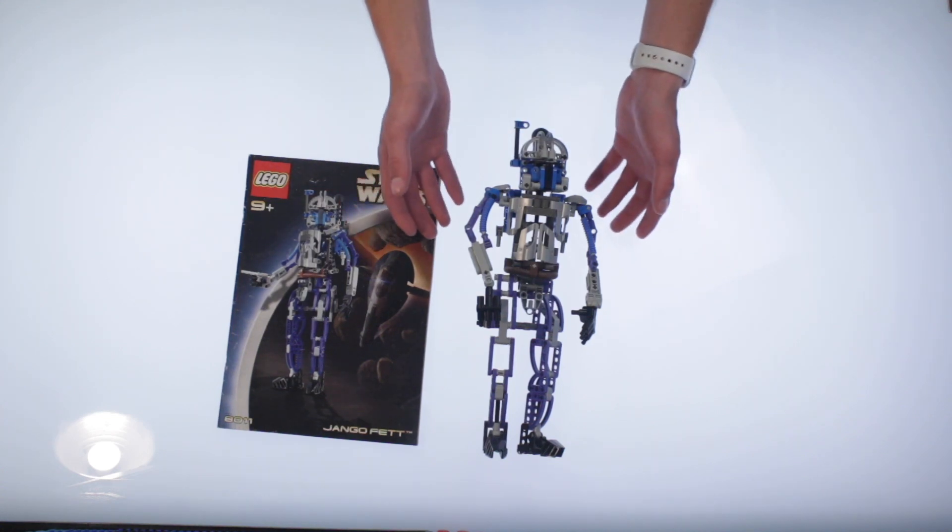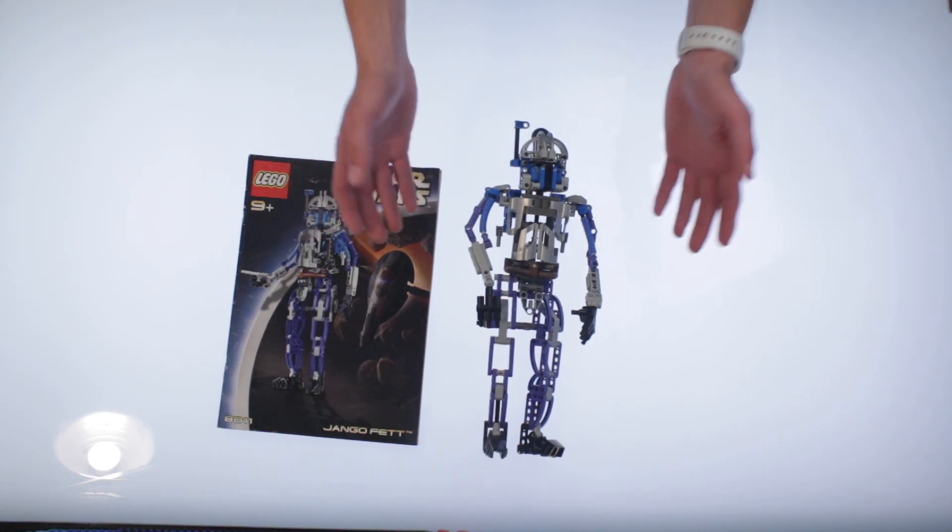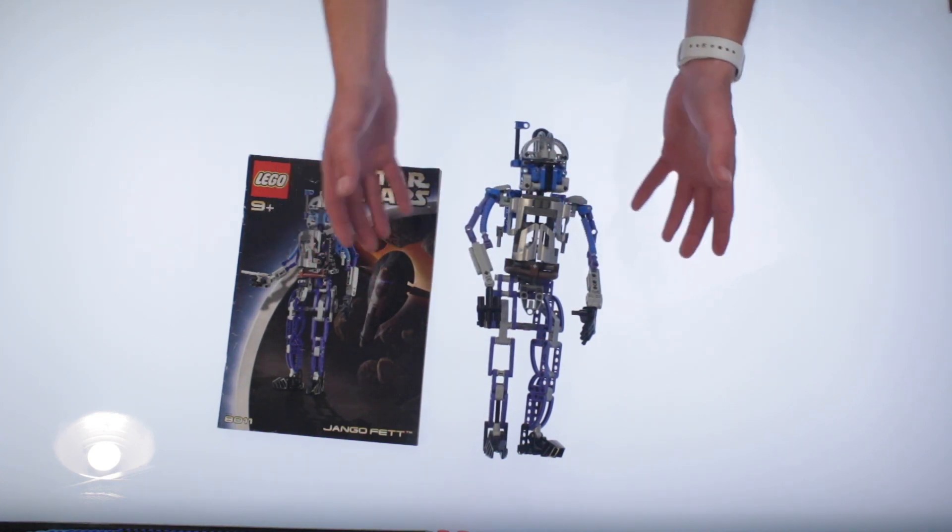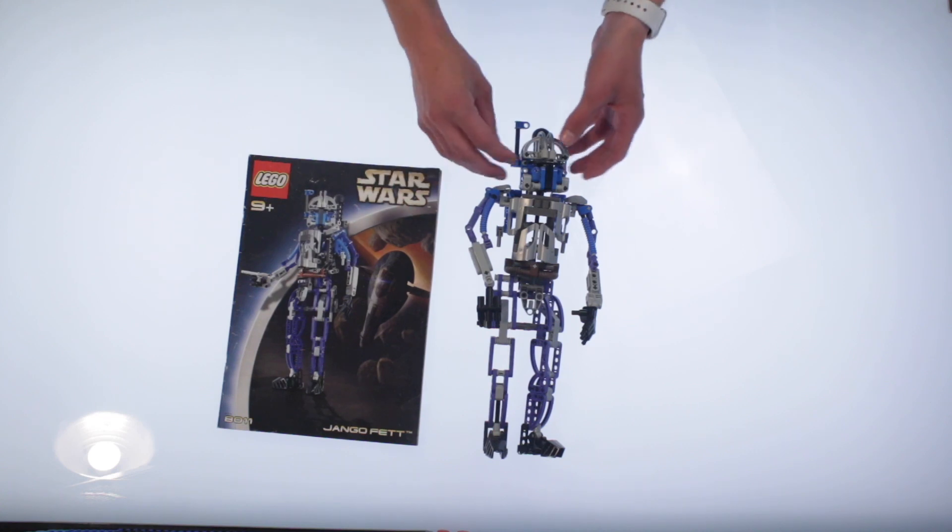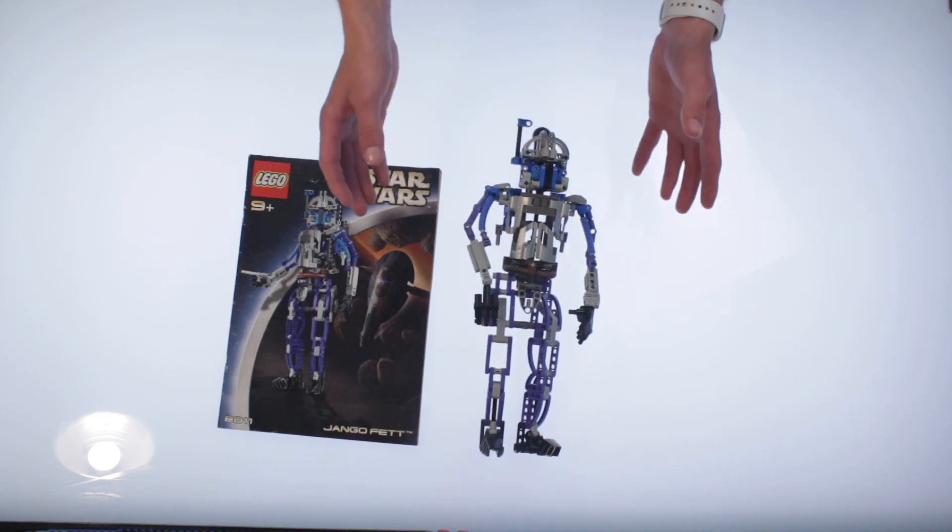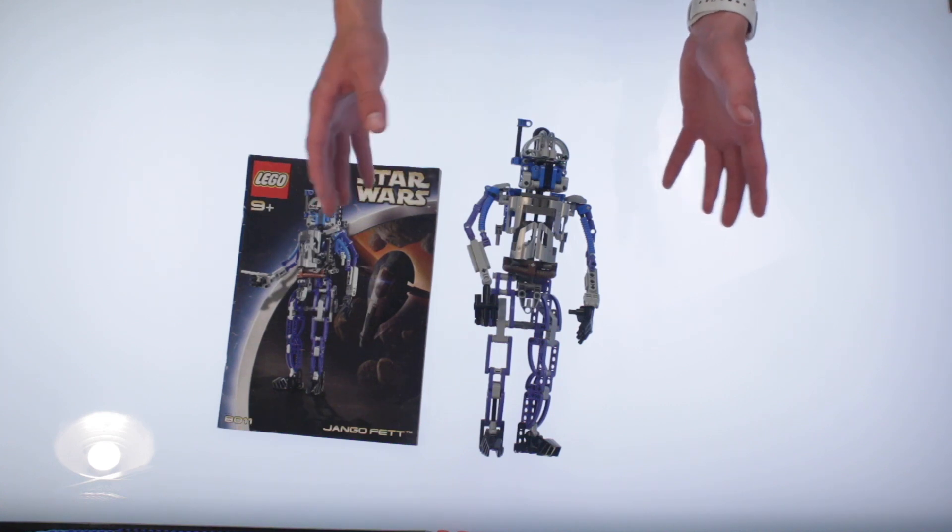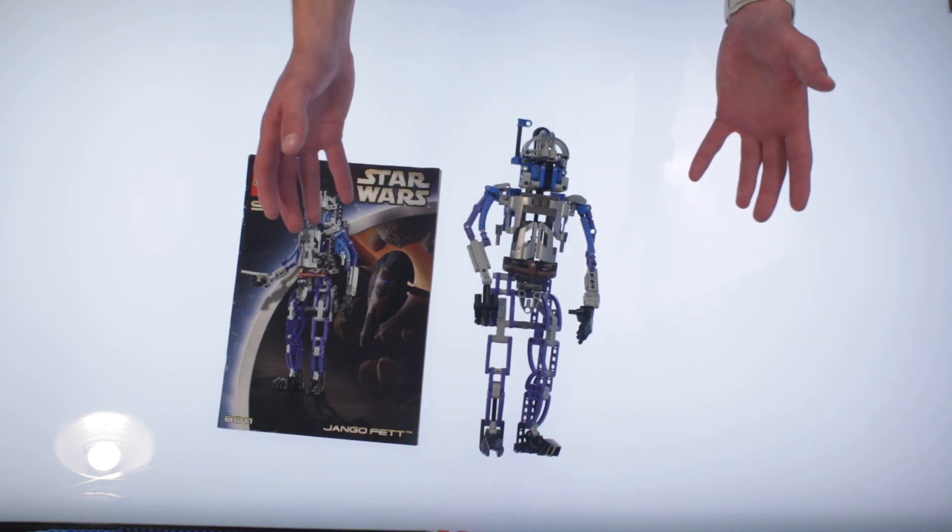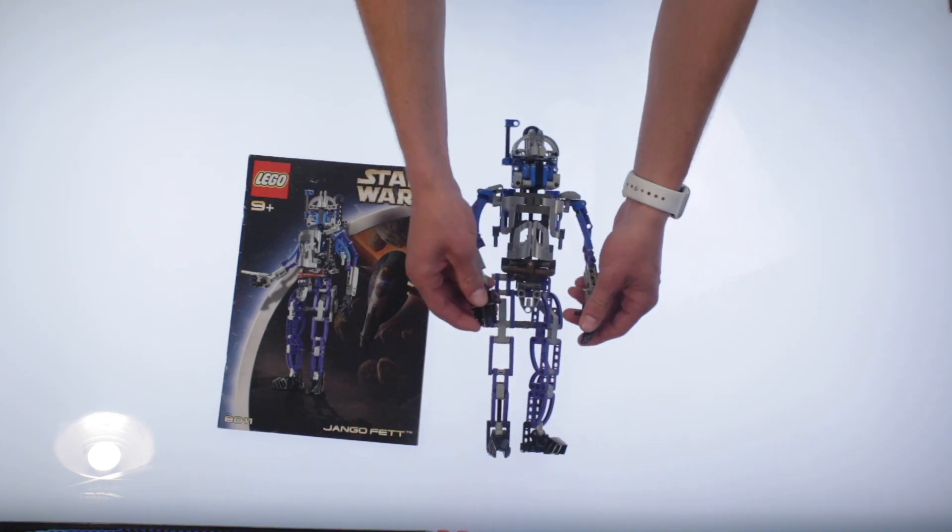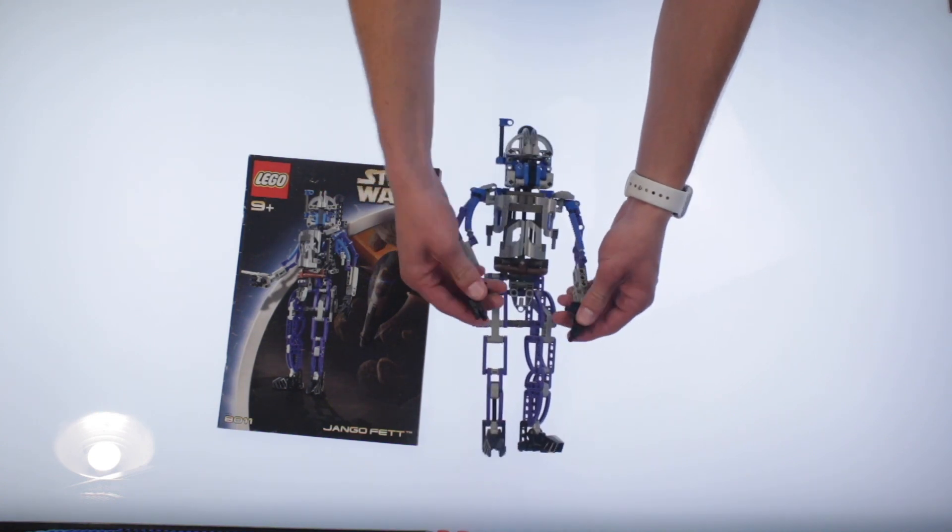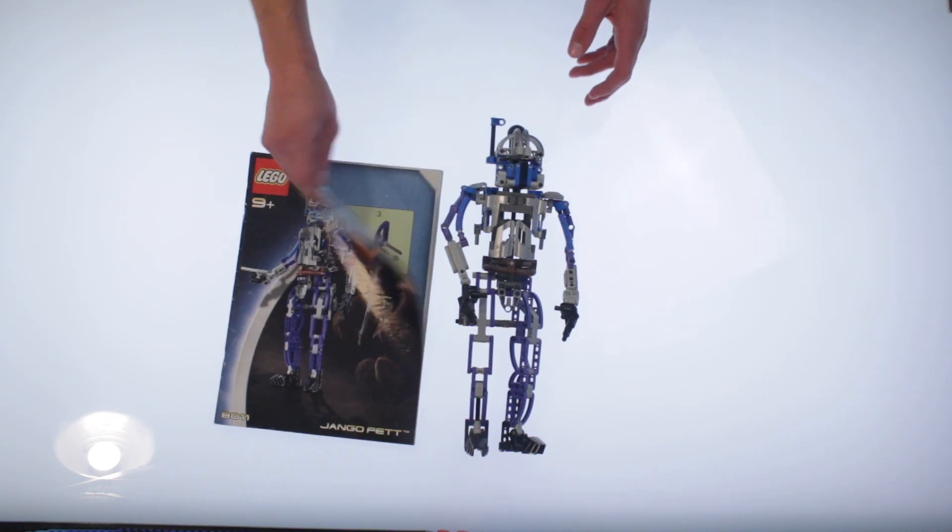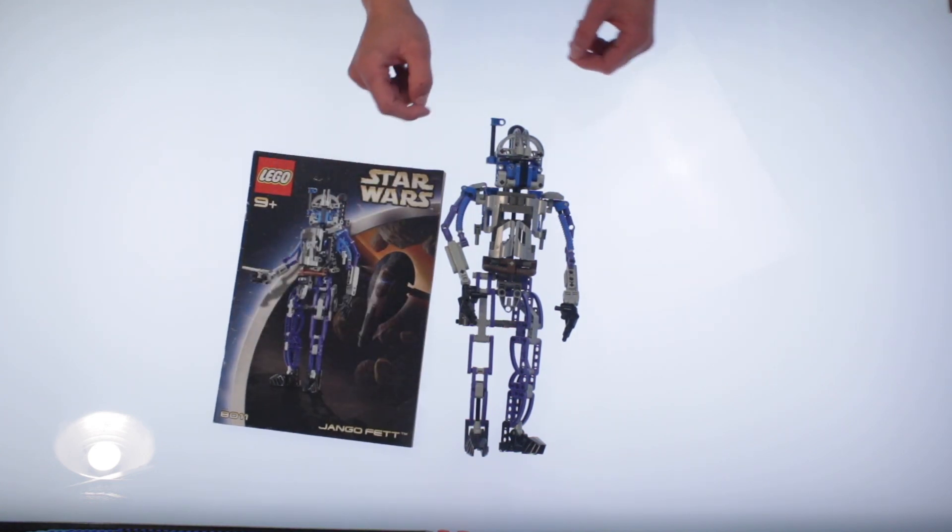This one doesn't have any custom pieces. It has custom colored pieces, but it doesn't have unique pieces to this set. It just has a piece in this set that no other set has in that color. So it's different in that regard, and I think this one probably should have had an alternate build. I really think this is one of the few that I genuinely think they missed the mark on not making an alternate build for.